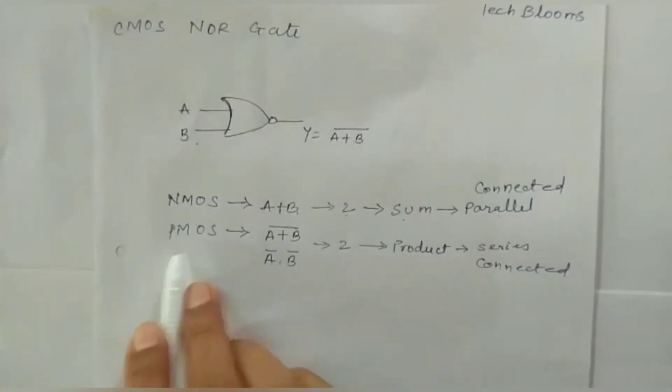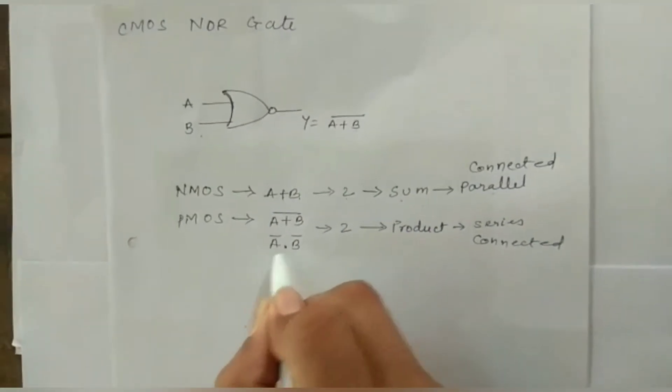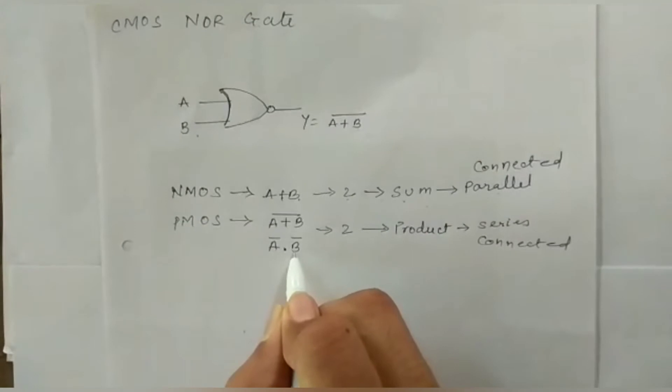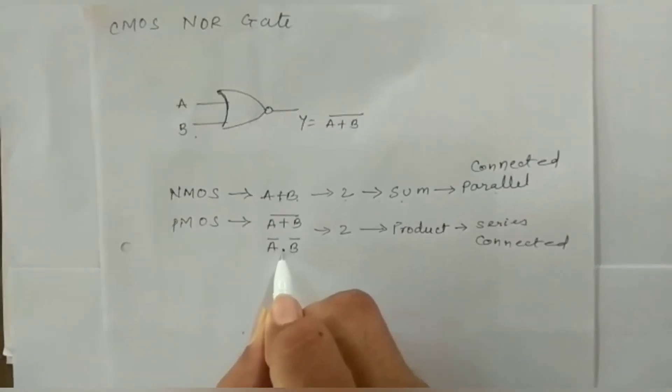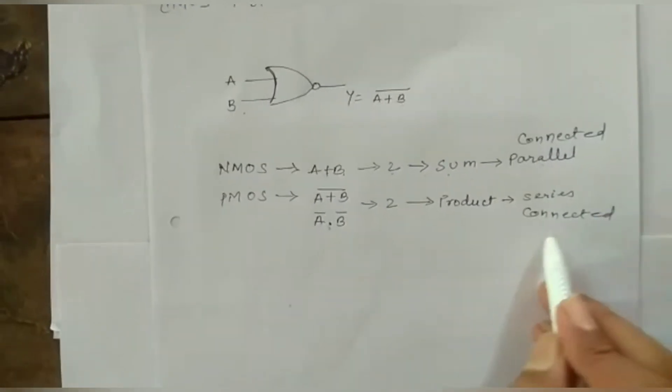And for PMOS from the expression we will use the de Morgan's law that is A bar dot B bar. Since it is a multiplication, this is a product, so it is connected in series.